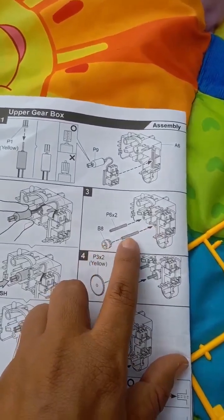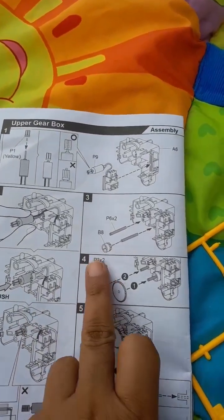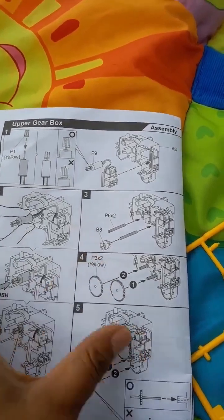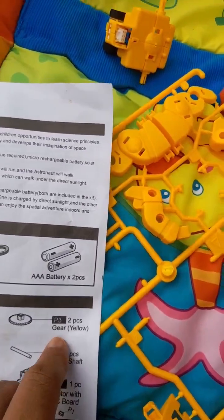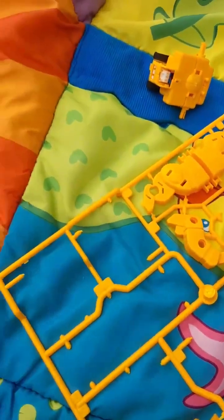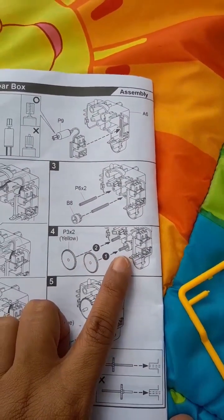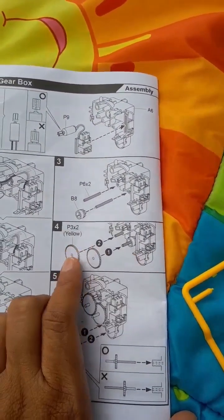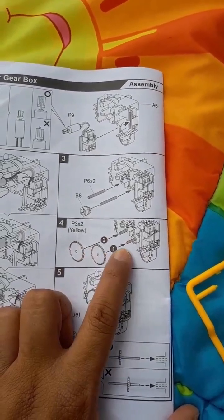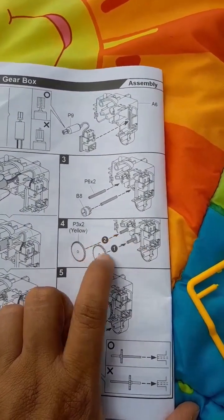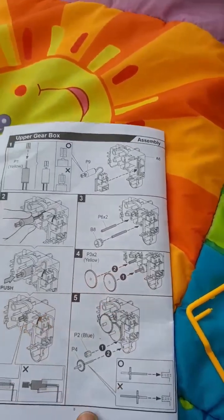Now we need two P3 parts. P3 are yellow gears. So here you can see one and two. Place first gear first, then second gear. It is very important to place the first gear first, then the second one. It means right gear first, then second gear second.